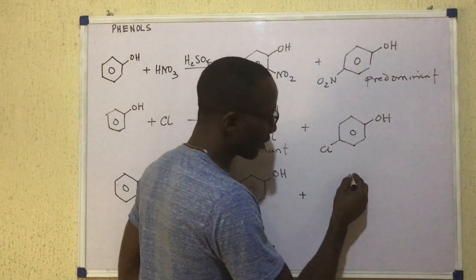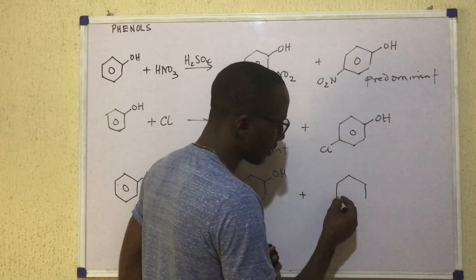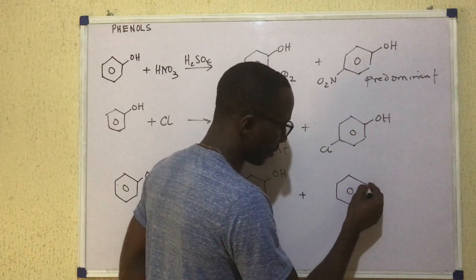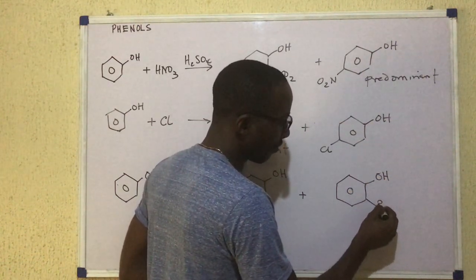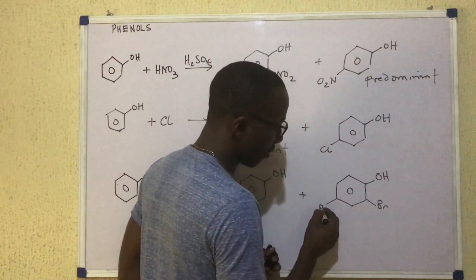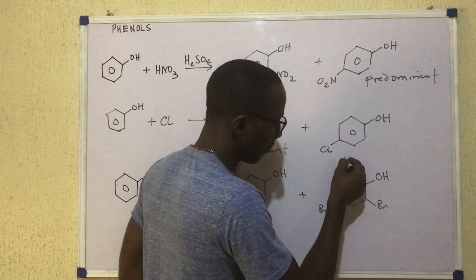Then you have bromine here in the para-position. That's one product. Then you are going to get, surprisingly, a second product that looks like this. This is OH. Then down there we have Br. Here we have Br and there we have Br.